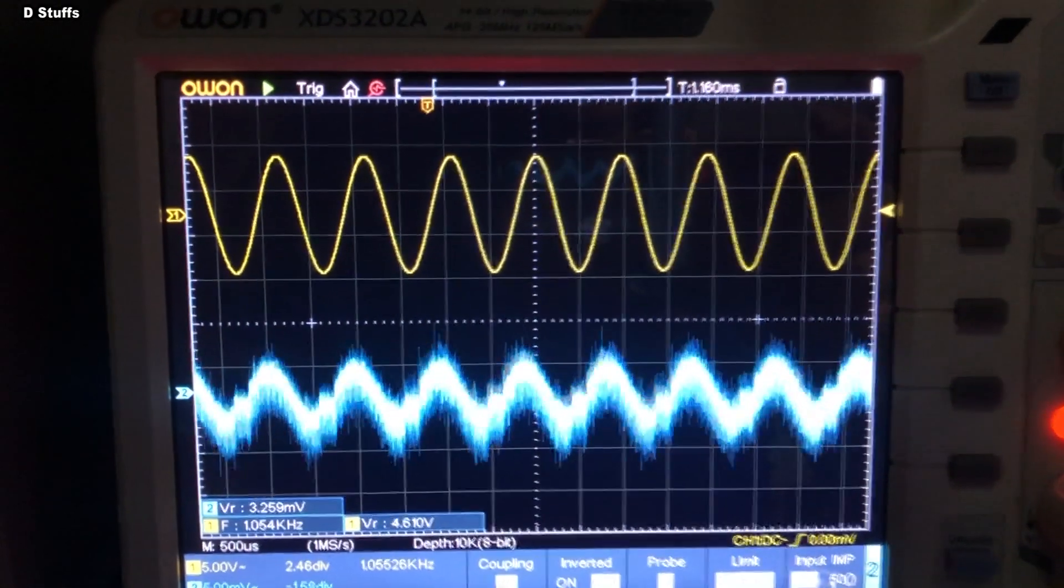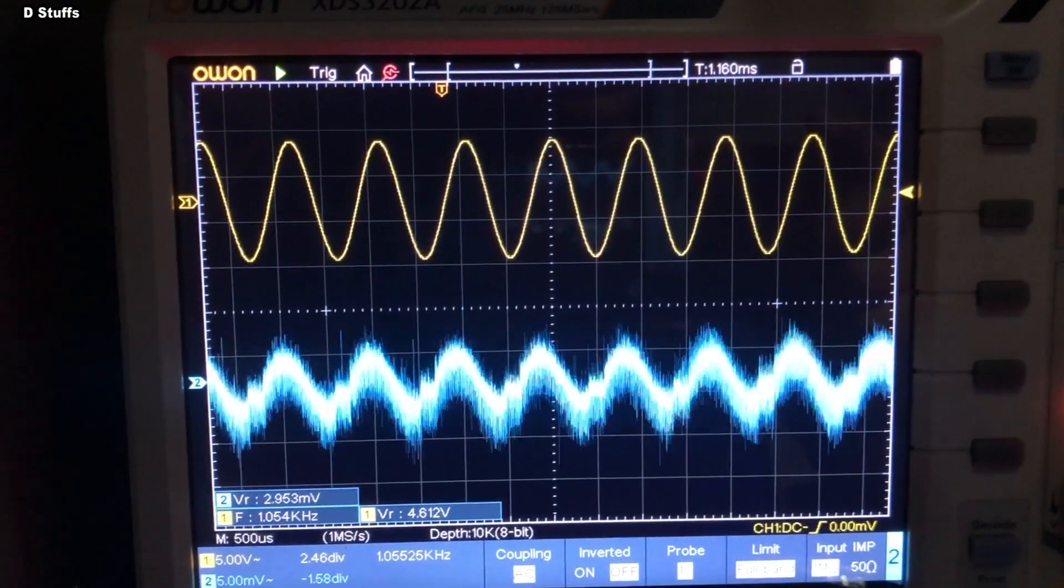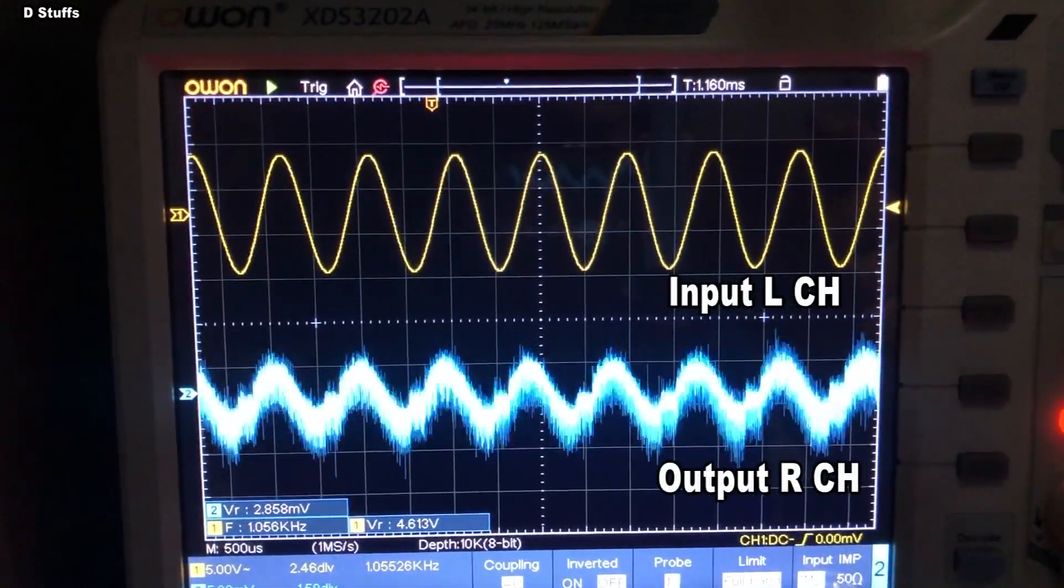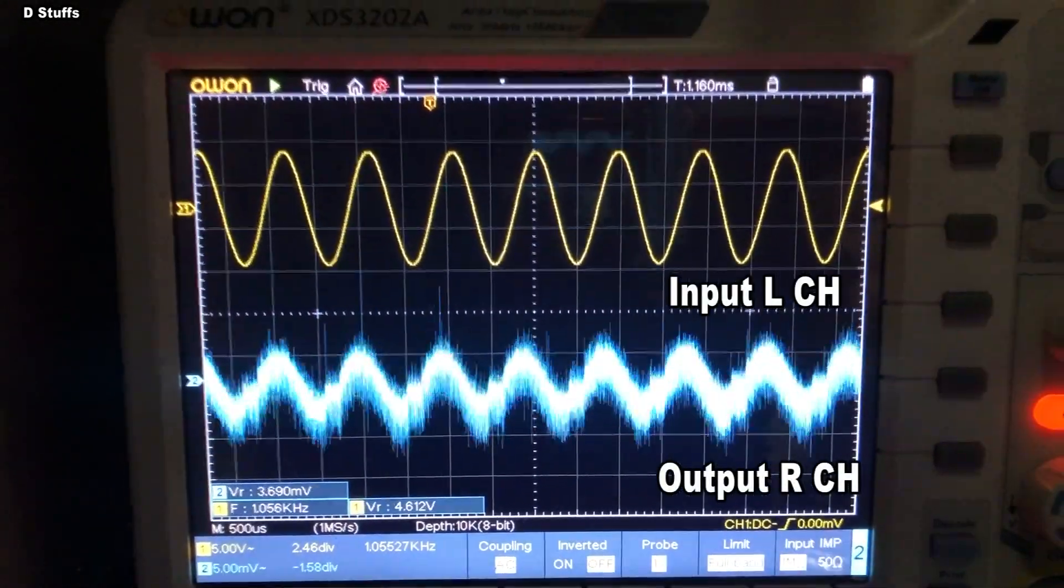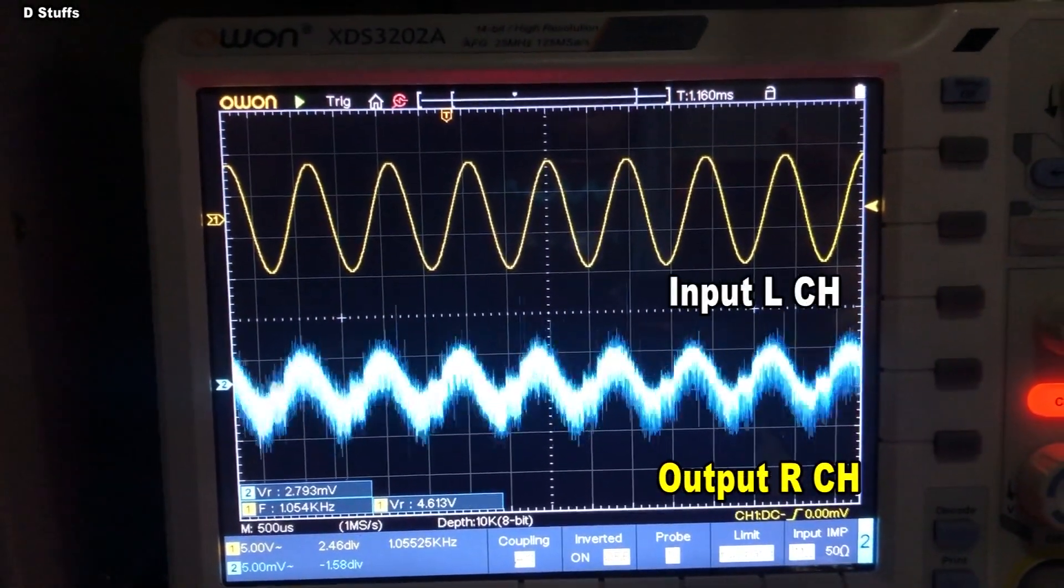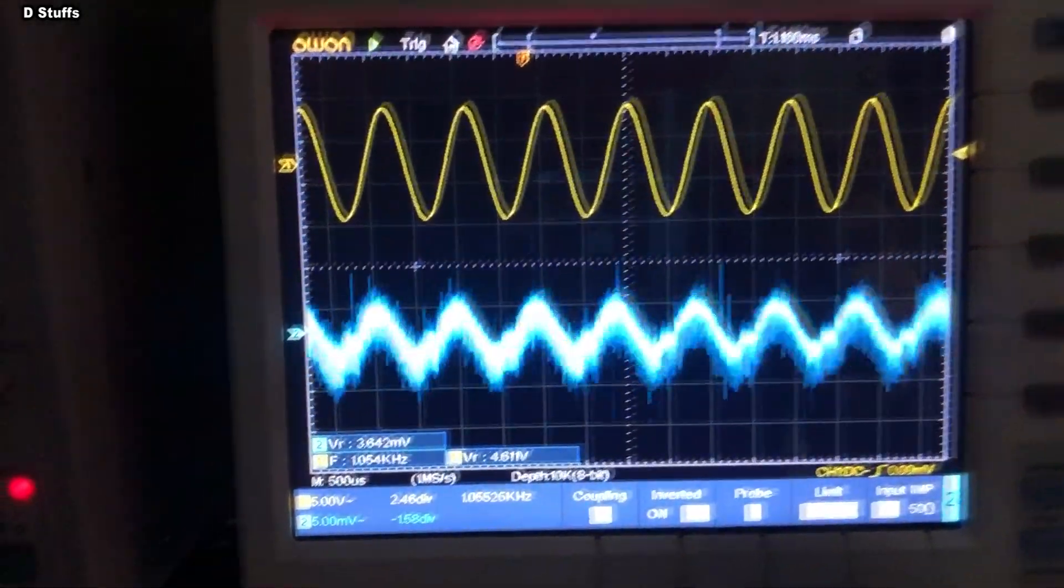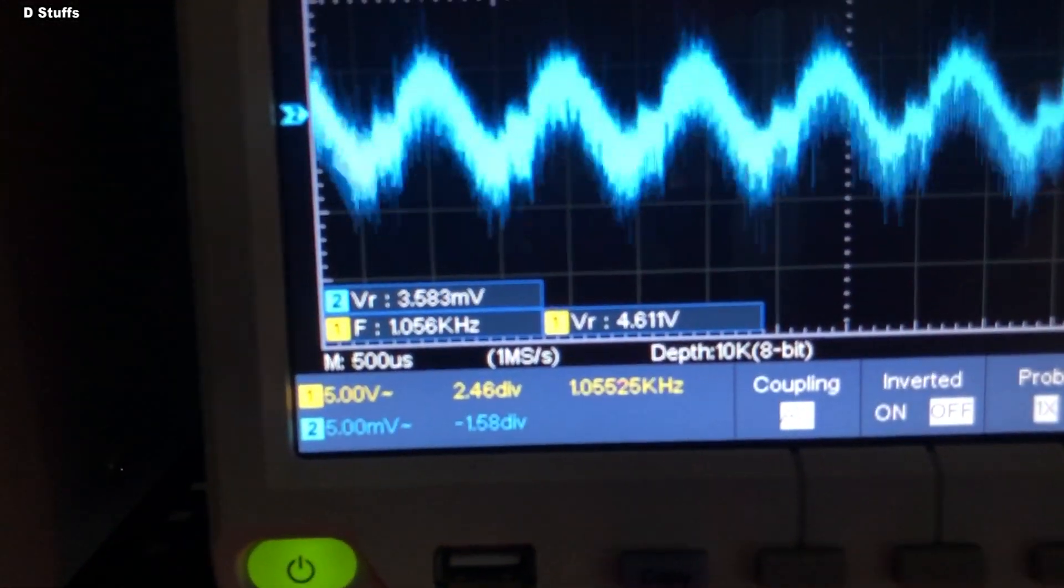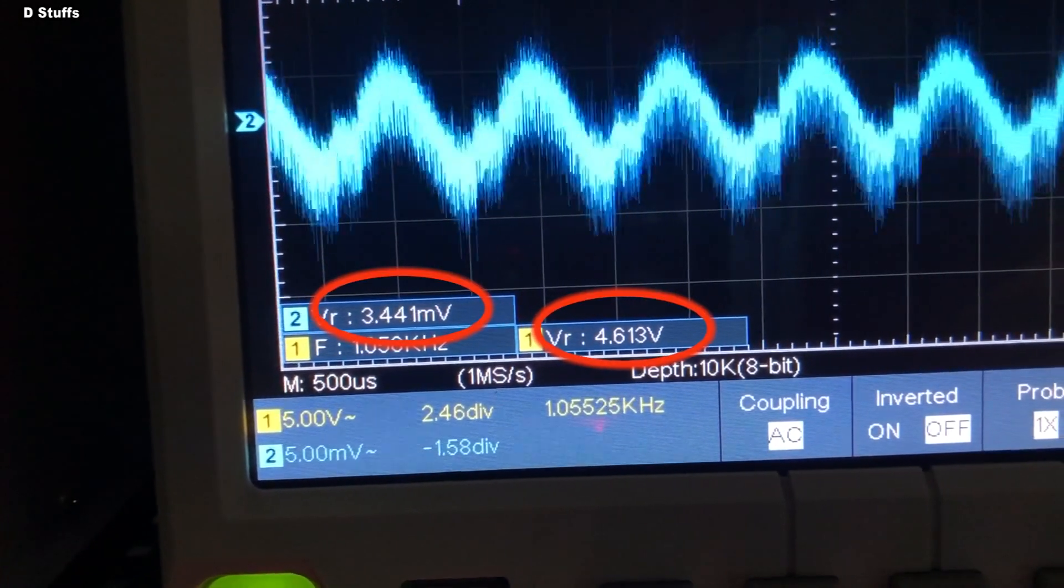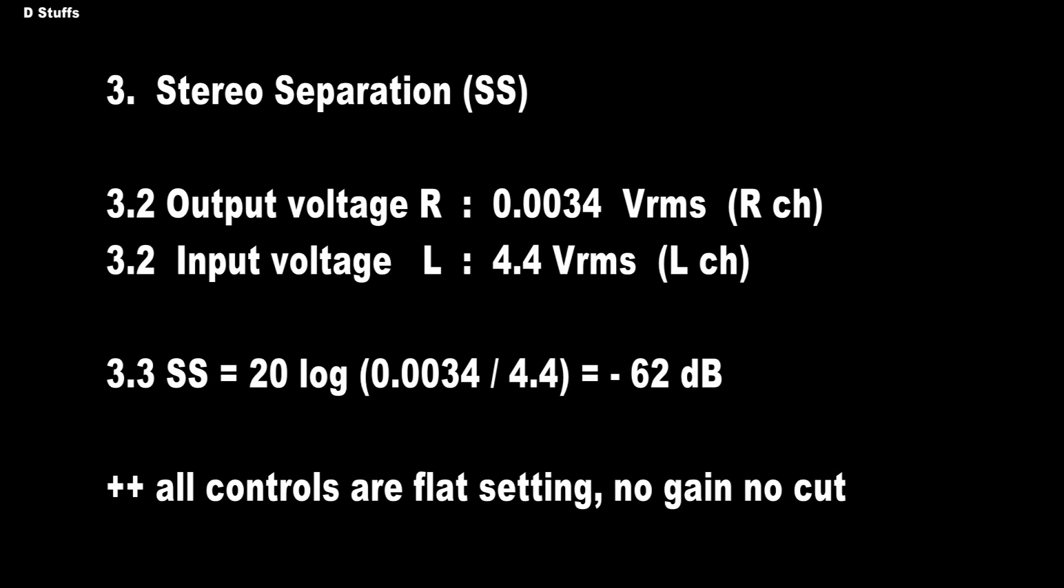This is the test method I'm going to do. I'm going to inject 4.7 V RMS at the left channel, and then monitor the output at the right channel. I'm going to measure the cross-talk injected from the left channel to the right channel, and I get here about 62 dB. That means the attenuation between the left and right channel is 62 dB.